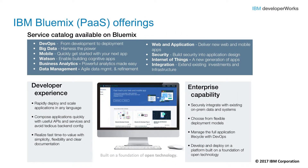IBM Bluemix provides a wide range of compute deployment options in a platform-as-a-service model. These PaaS models are based upon open standards, providing a cloud platform for building, managing, and running applications of all types — web, mobile, big data, IoT, and so on. In addition to these compute models, Bluemix brings a full suite of cloud services all in one place, such as API management integration, DevOps, cloud integration, big data, analytics, security, Watson, and more — all helping to enhance your development experience and provide rich features for your applications. Whether you're creating apps for the web, mobile, IoT, or big data, Bluemix can help you build them smarter and get them to market faster.